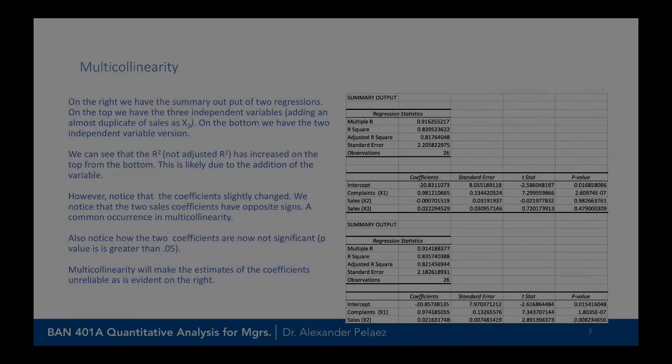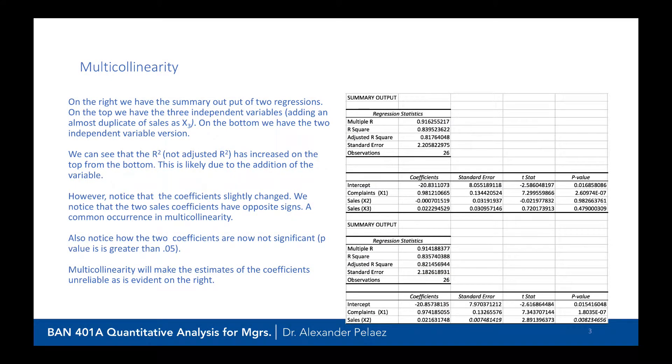On the right, we have a summary output of two regression equations. On the top, we have three independent variables, adding an almost duplicate of sales as X3. On the bottom, we have the two independent variable version.